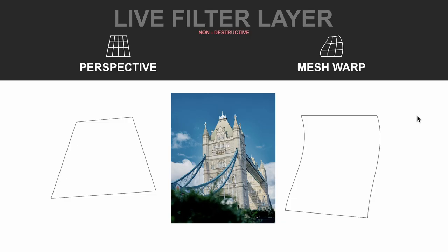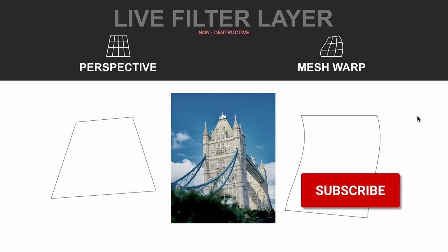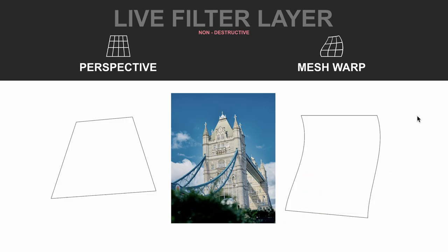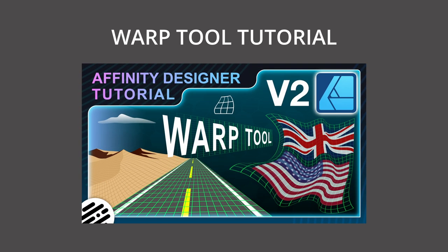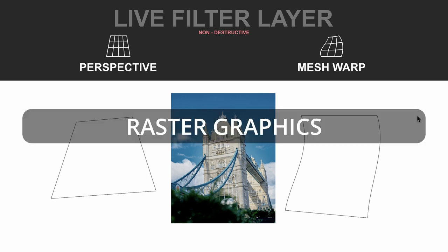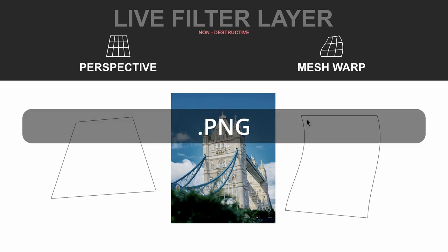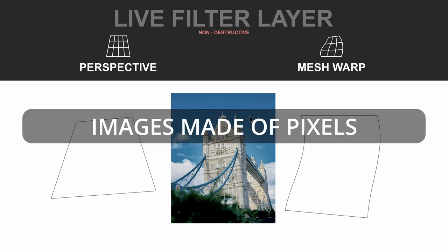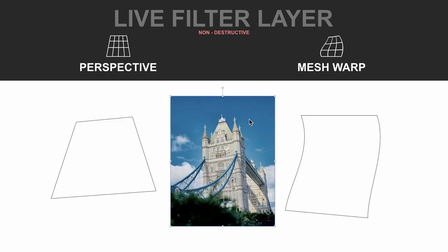Live filter layers allow you to manipulate an image in a non-destructive way. When I talk about image, I'm not talking about vectors. If you want to manipulate vectors with warp tools, use the vector warp tool. This one is for mainly raster images — think JPEGs, PNGs, anything made of pixels, like a photo.